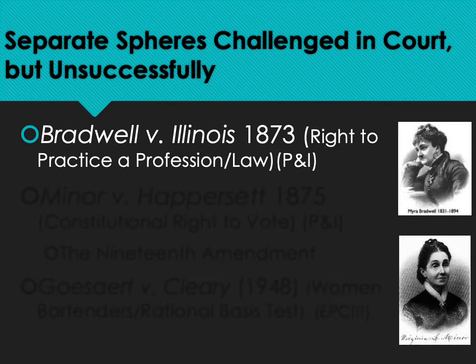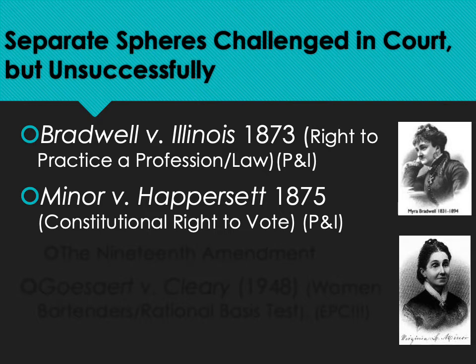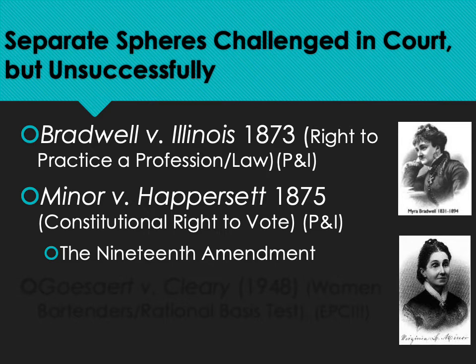Bradwell argued under the Privileges and Immunities Clause of the 14th Amendment that the right to practice a profession was a privilege granted to all citizens, but the Supreme Court did not accept that argument. The second case your textbook discusses is Minor v. Happersett from 1875, dealing with whether a person has a constitutional right to vote under the Privileges and Immunities Clause. Women who tried to vote and were arrested argued this right, but the Court said being a citizen doesn't guarantee a national right to vote — that was determined state by state. Minor v. Happersett was later overruled by the 19th Amendment.